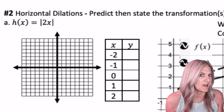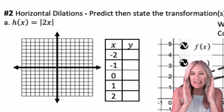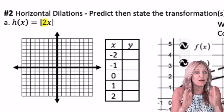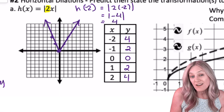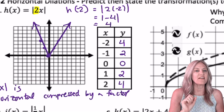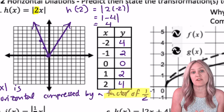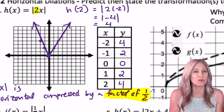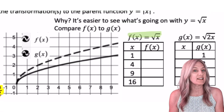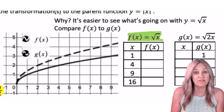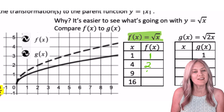Now let's look at horizontal dilations. We now have that multiplier — the factor — inside the absolute value bars: the absolute value of 2x. It's a little hard to see on our absolute value function family, so let's go to our square root function family. Let f of x equal the square root of x. Square root of 1 is 1, square root of 4 is 2, square root of 9 is 3.